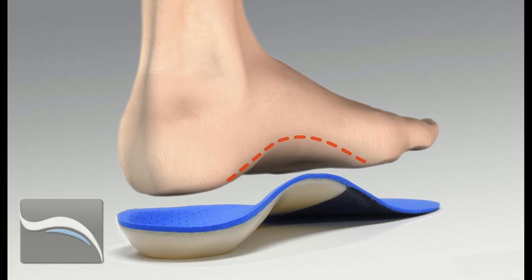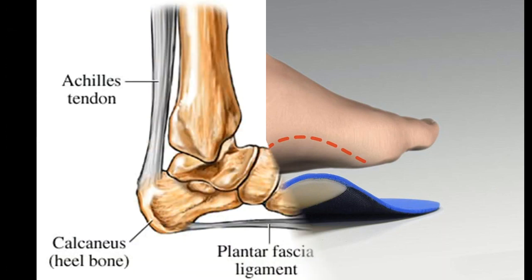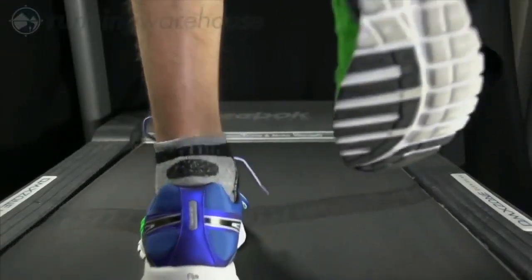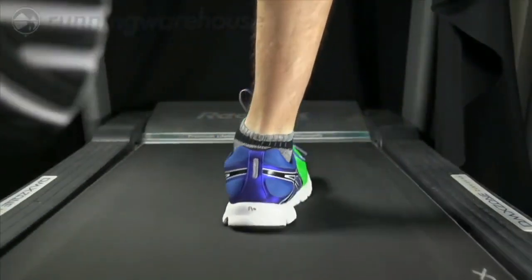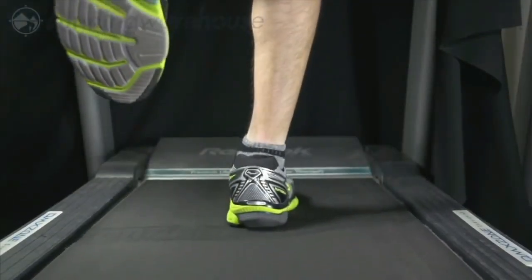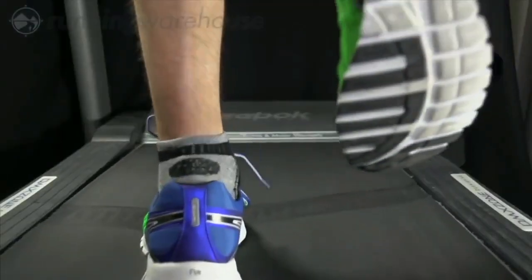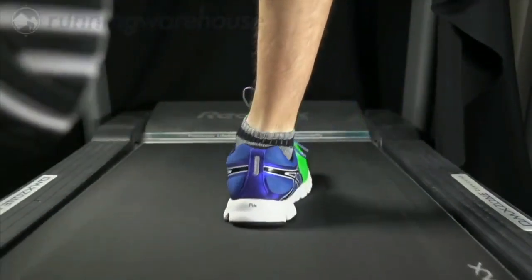One of the most common injuries is plantar fasciitis. This is when the plantar ligament — the tissue running from your heel to your toe — gets swollen. Let's understand the physics behind it. As we run, we land on our heels and take off on our toes. Our whole heel isn't being used; we roll on the outer edge of the heel and land on the balls of our feet. Since sneakers are an extension of our feet, having sneakers that mimic this design will help them be more comfortable.